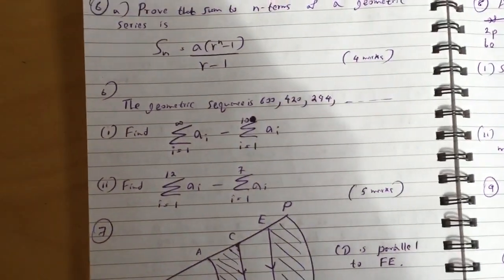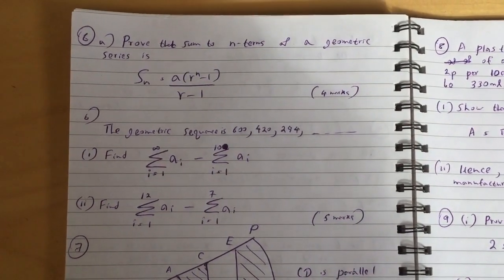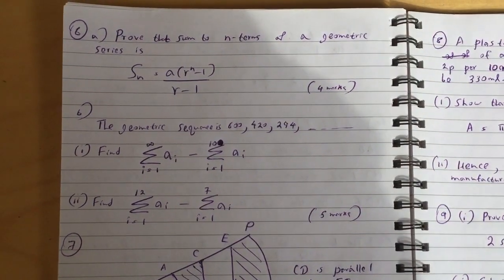Question six: prove that sum to n terms of a geometric series is S_n equals a(r to the n minus 1) over (r minus 1).